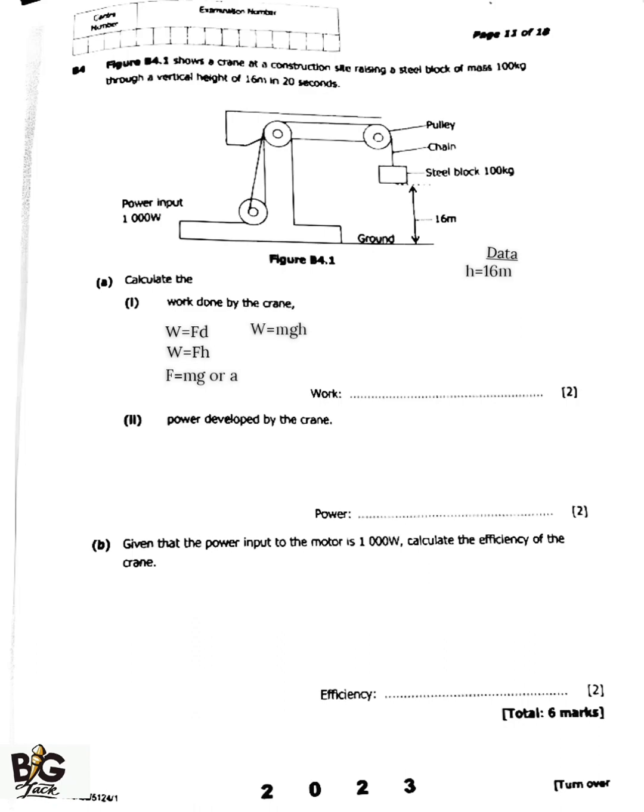Our mass here is 100 kg, so 100 kg multiplied by the acceleration due to gravity, which is 10 newtons per kg, multiplied by the height which is 16 meters. So 16 multiplied by 100 multiplied by 10, I'm going to get 16,000 joules. So work here is measured in joules, or the SI unit for work is joules.